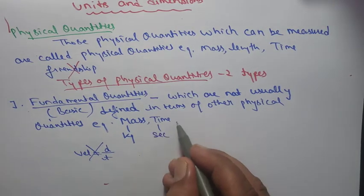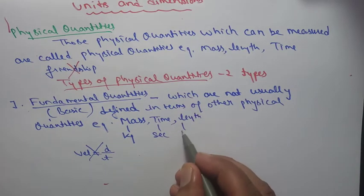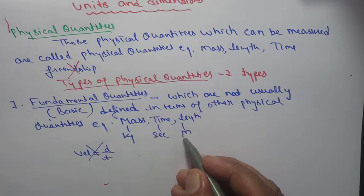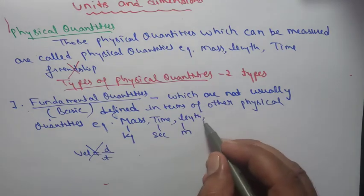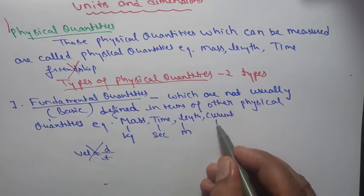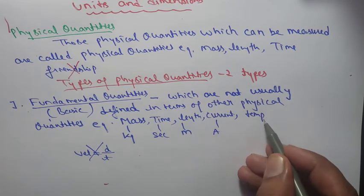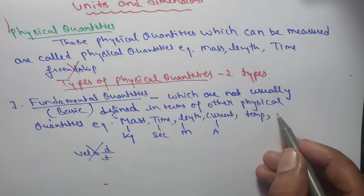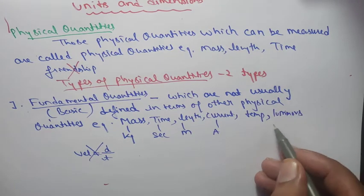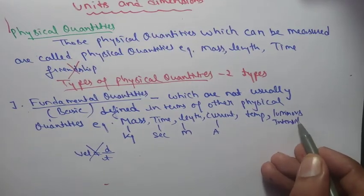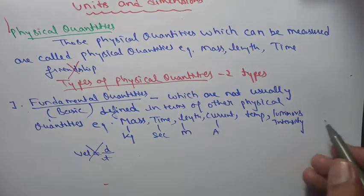Time is measured in seconds, length in meters, mass in kilograms. Further fundamental quantities include electric current in amperes, temperature in Kelvin, luminous intensity in candela — which we will define later — and mole of substance in moles.